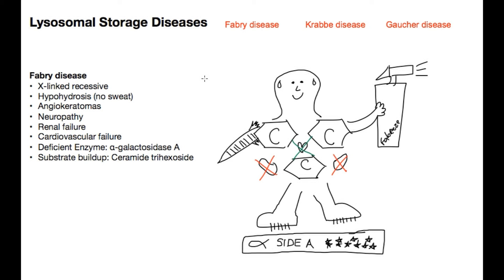Some of the ones I had difficulty remembering were Fabry disease, Krabbe disease, and Gaucher's disease, so I drew some picture mnemonics to help me remember them. I'm going to describe them to you and hopefully you can use these to help you on your boards or wherever you need them. The first one is Fabry disease — I drew a guy holding a Febreze can because Fabry kind of sounds like Febreze.